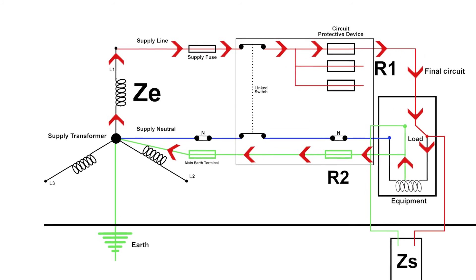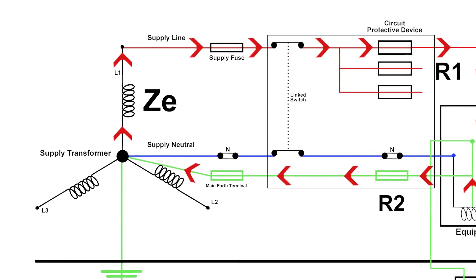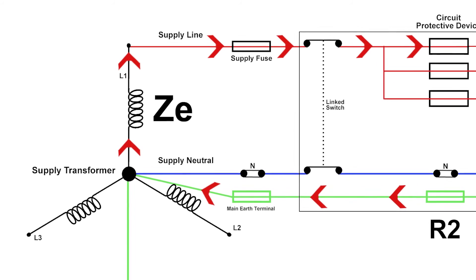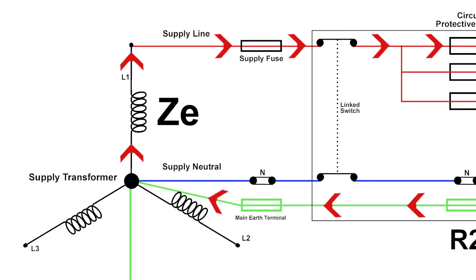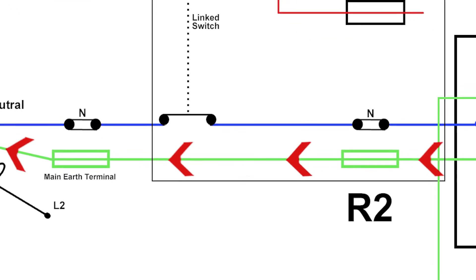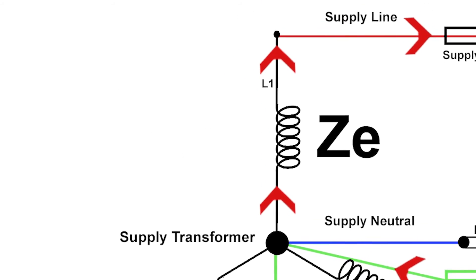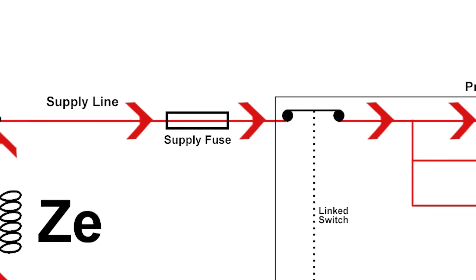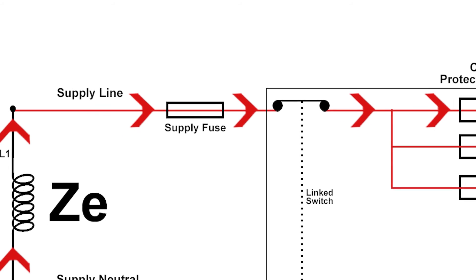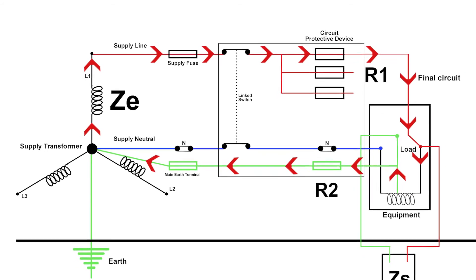So our earthing system is made up of really three components. We've got ZE, the E would be for external, Z is for AC resistance or impedance. So the resistance of our supply earth and supply line would form our ZE. If we wanted to measure ZE, we would just measure from our disconnected earth at the earth terminal, the main earth terminal, round to our incoming line on our main switch. That would give us ZE, but it's important at that point to disconnect the earth. You can see how to do that test in the other videos.